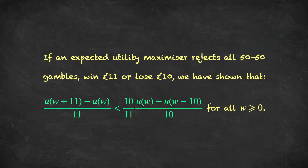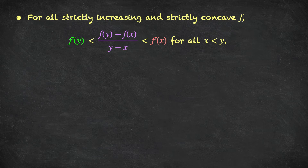So far we've shown that if an expected utility maximiser rejects all 50-50 gambles where you can win £11 or lose £10, then a certain inequality must hold for all non-negative levels of wealth — a relationship between differences in utility, which is essentially marginal utility. Now, the following inequality is necessarily true for all strictly increasing and concave functions f: the derivative of f at point y is less than [f(y) − f(x)] / (y − x), which is also less than the derivative of f at x, whenever x is less than y.